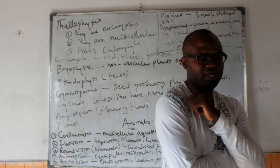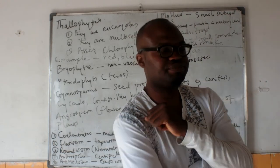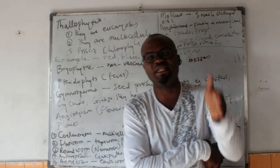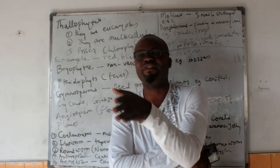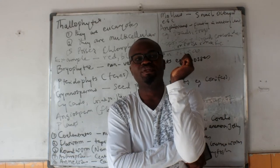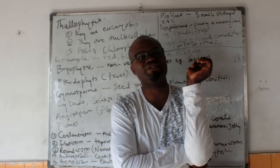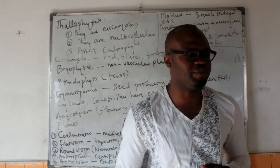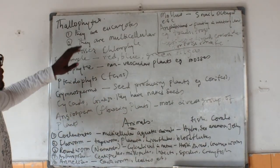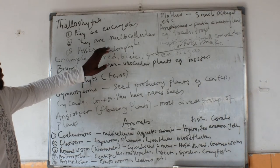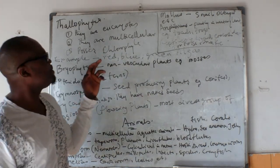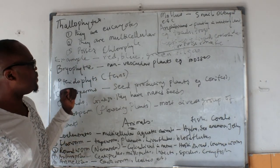Those are the classifications that we looked at last time. But apart from the kingdom level, there are also other levels like the phylum, the class, the order, and the rest of them. Under those other classifications, in today's class we are going to be giving some examples. We have the thalophytes, which are unicellular and multicellular organisms that possess chlorophyll and chloroplast.